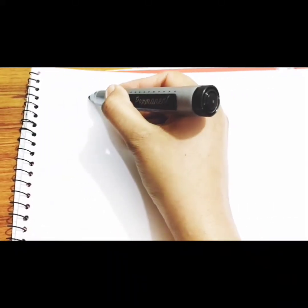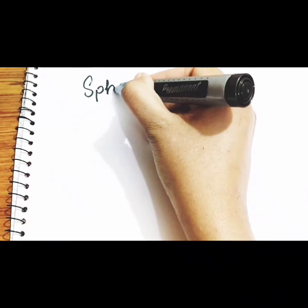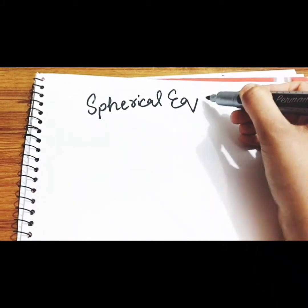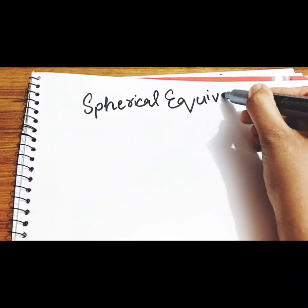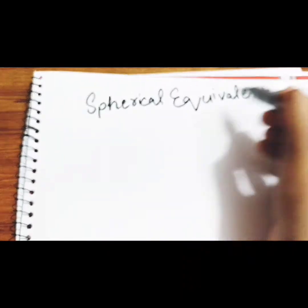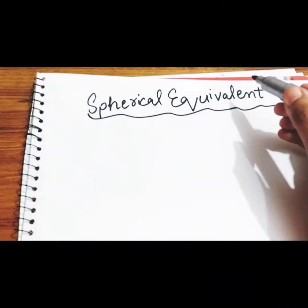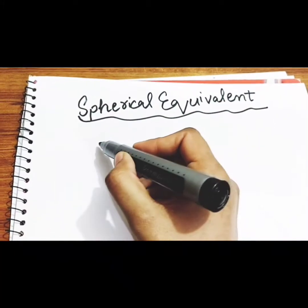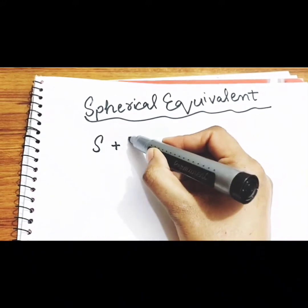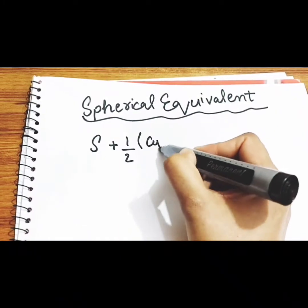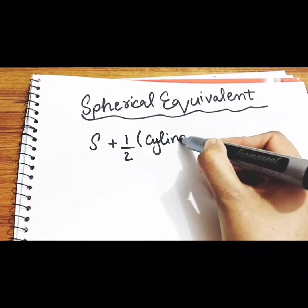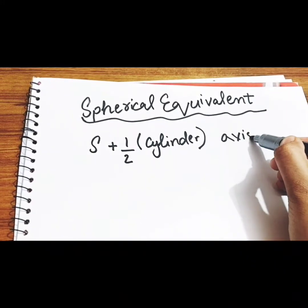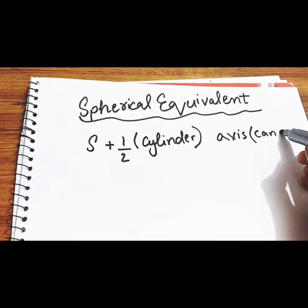Hello everyone, today I will explain spherical equivalent. As the name indicates, spherical equivalent is an equivalent form of a sphero-cylinder combination or a toric lens. We are actually converting a sphero-cylinder combination into a spherical form. The formula is: sphere plus half cylinder. The axis (X) is not used in this formula, so we cancel it out.